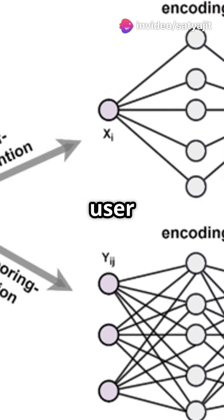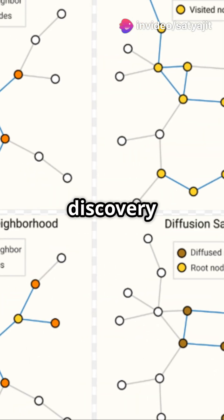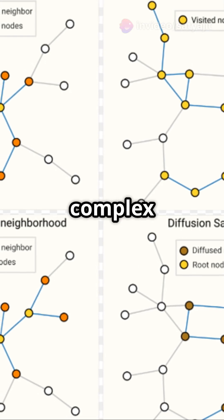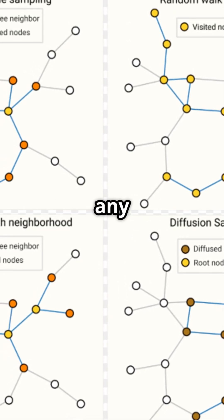GNNs are everywhere, from predicting user behavior in social networks to drug discovery and recommendation systems. They capture complex relationships and work flexibly with any graph structure.